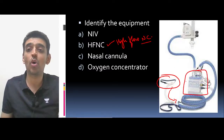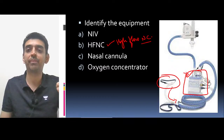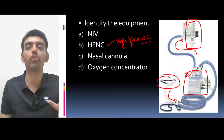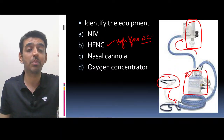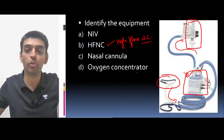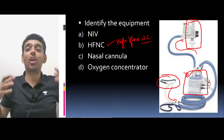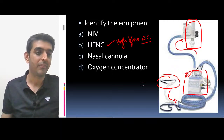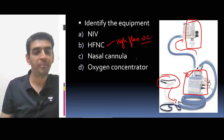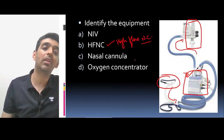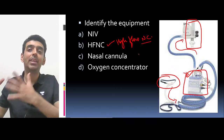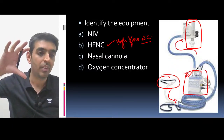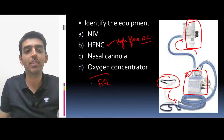The nasal cannula is attached to tubing going via a humidifier, and along with that you will see the flow meter or flow rate from where we determine how much oxygen is to be delivered. The FiO2 that can be delivered is up to 100%. In a normal nasal cannula we can go up to 15 liters, but that is a low-flow device.